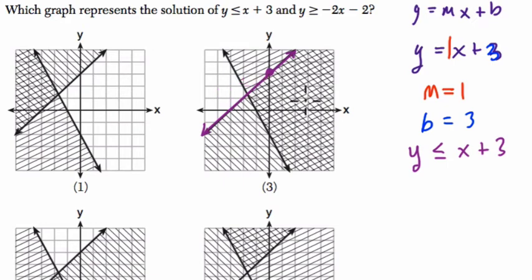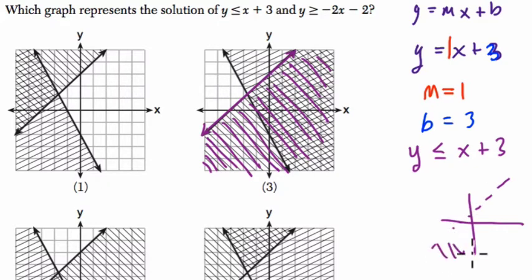And then on our graph, we're shading everything below it, as these lines are right here. So this is everything on the line and everything below it. If it was just y is less than x plus 3, you would have a dotted line, and then everything is shaded below it. If it was less than and not less than or equal to, the line would become a dotted line.